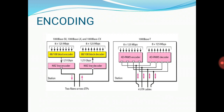These are two diagrams of encoding. The first diagram includes 1000BaseSX, 1000BaseLX, and 1000BaseCX, which describes two fiber or two STP connections. The next diagram shows 1000BaseT, which describes four UTP cables.